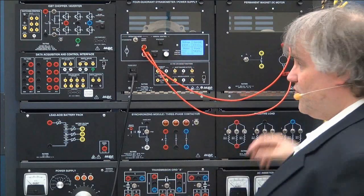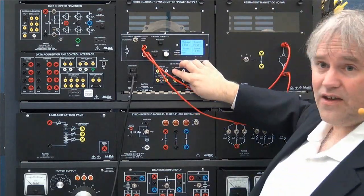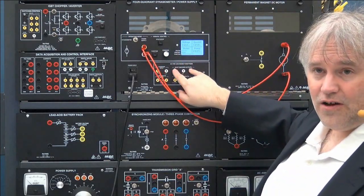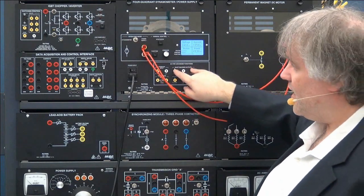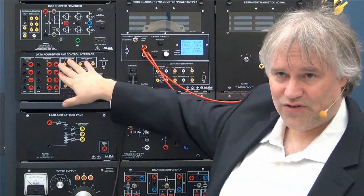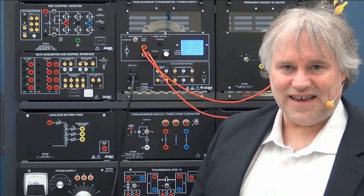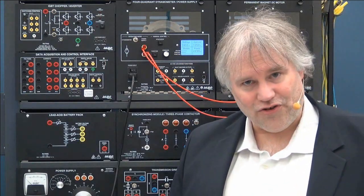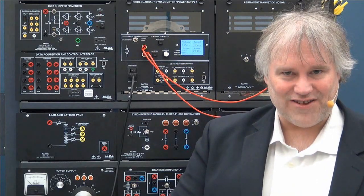Since we will be interested in knowing the actual speed of the machine when we apply more or less voltage to it, we will need to connect the shaft encoder outputs of the dynamometer directly into the data acquisition unit. So we can on the computer screen see the actual speed, torque, mechanical power and other interesting values.